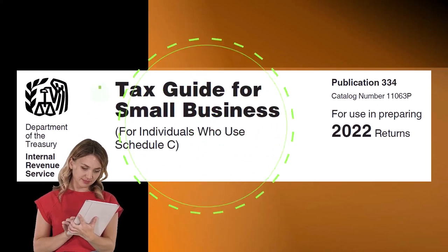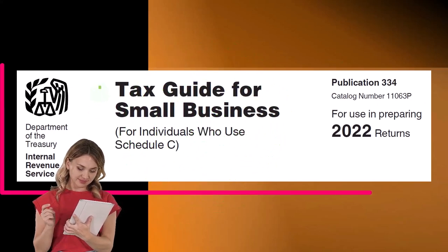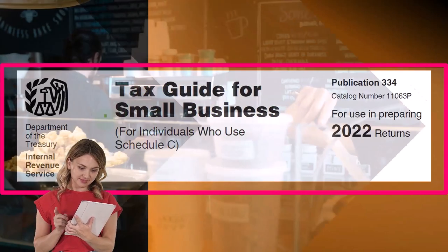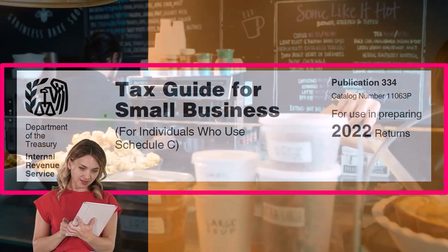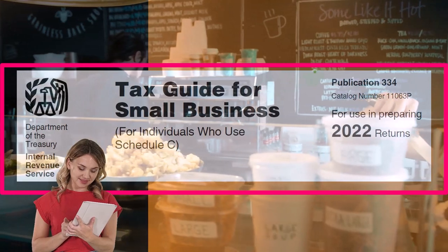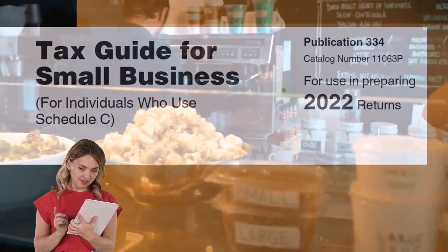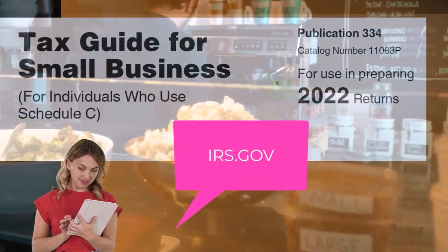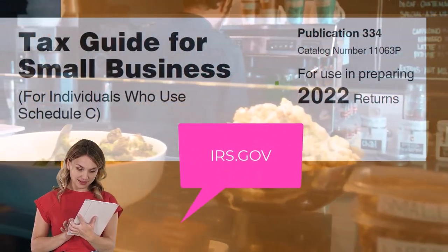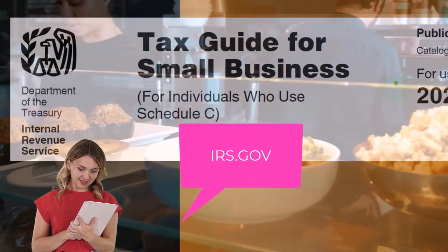Most of this information comes from the Tax Guide for Small Business for individuals who use Schedule C, Publication 334, Tax Year 2022. You can find it on the IRS website at irs.gov.